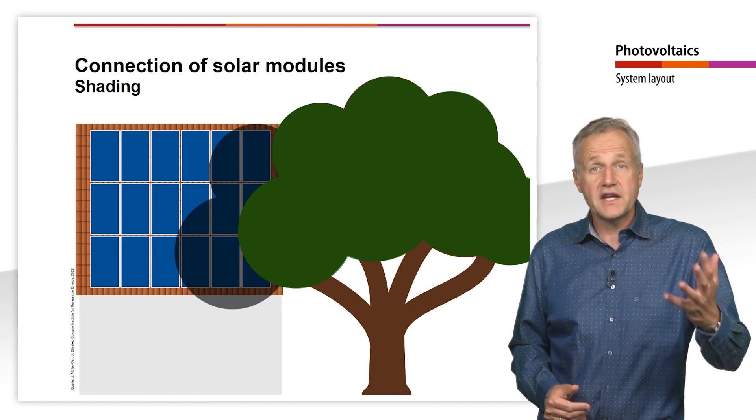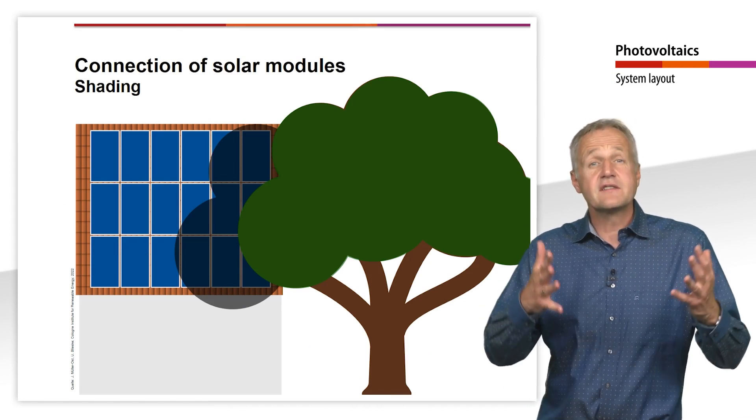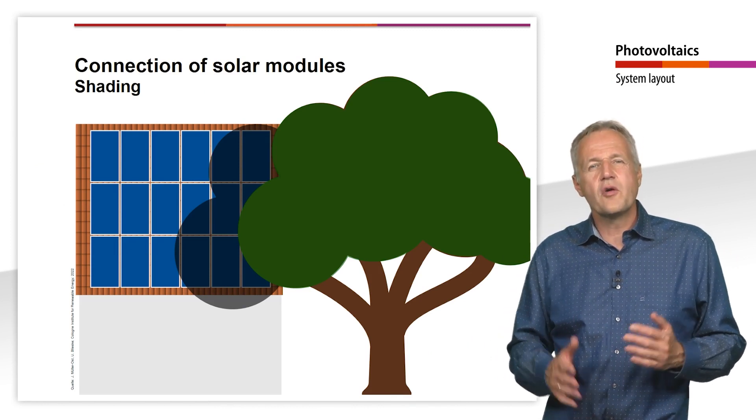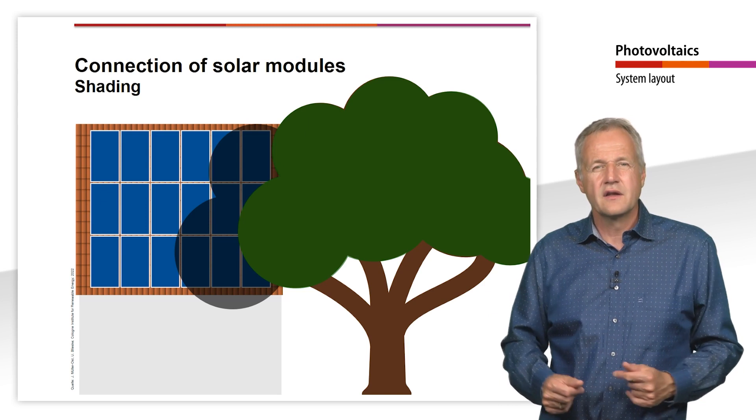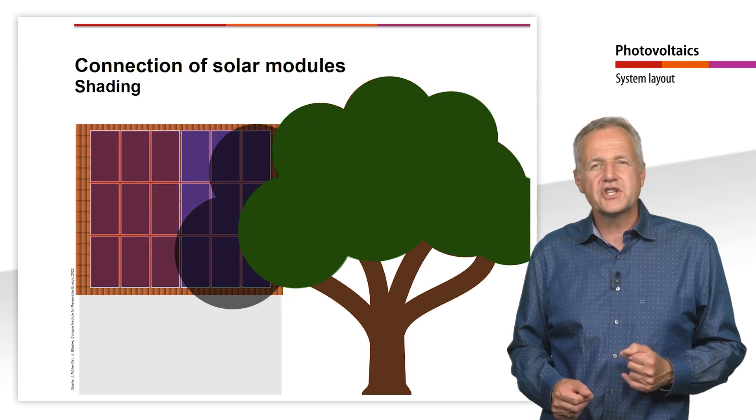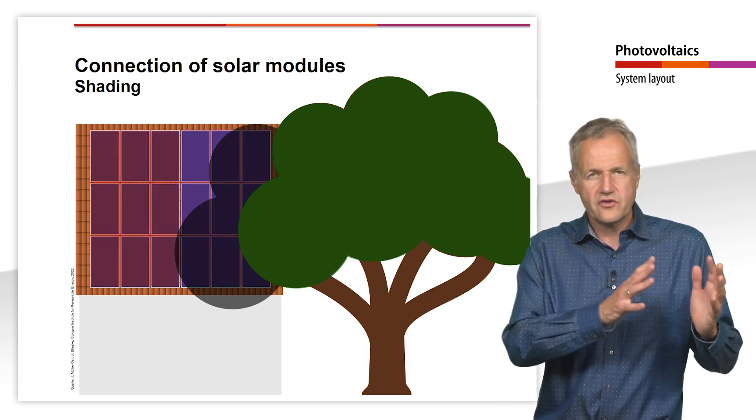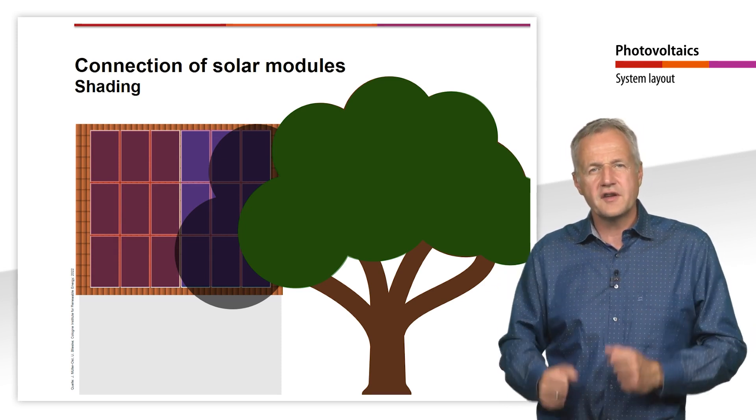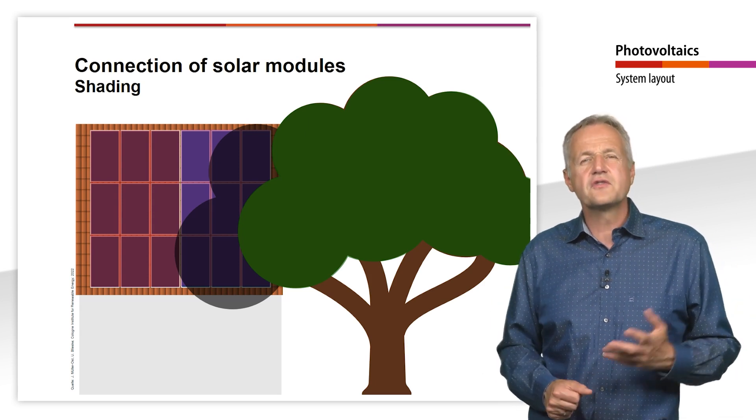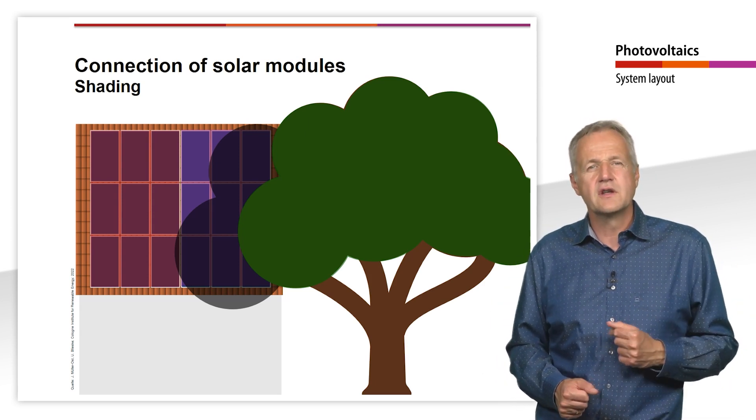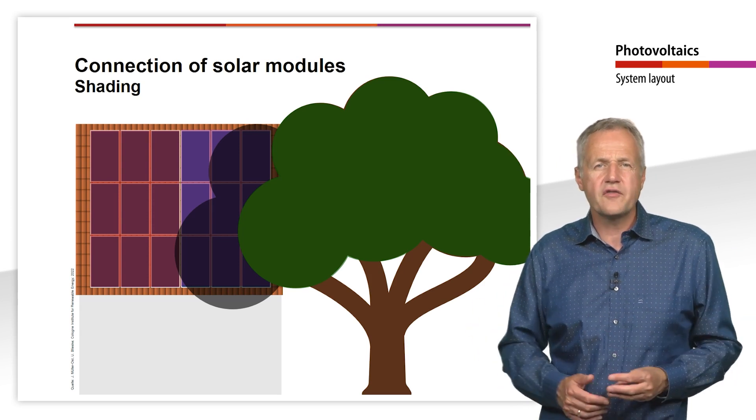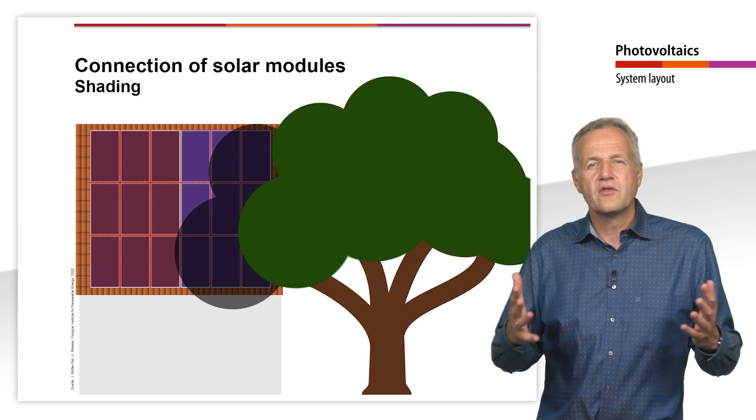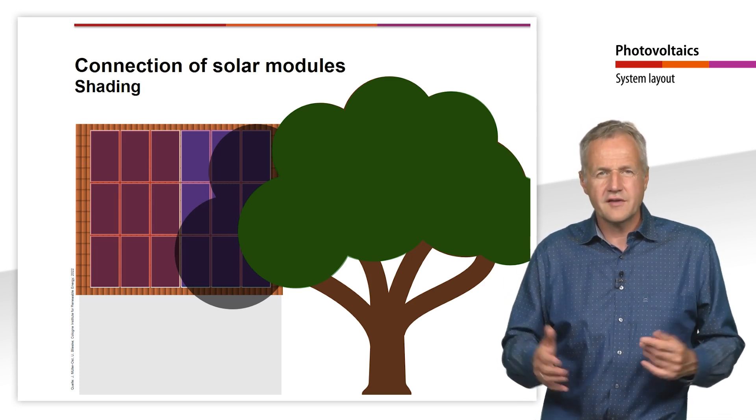The same applies to shading situations. If it is unavoidable that modules are shaded during the course of the day, these modules should be combined into one string. The permanently unshaded modules should also form a separate string. However, if the shading moves over the entire plant during the course of the day, it is often difficult to find an optimal string layout. In practice, there is a broad range of options for dealing with these interconnection problems. We will take a closer look at these in the following slides.